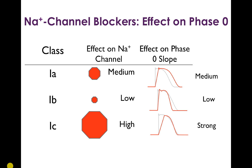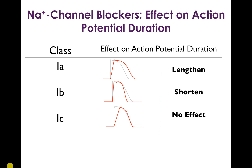Sodium channel blockers also vary in their effect on action potential duration, likely because they all have some effect on potassium channels as well. Class 1a drugs lengthen the action potential duration and prolong the QT interval — the surface manifestation of the action potential changes. Class 1b drugs shorten the action potential duration, and class 1c drugs have no effect on action potential duration. The key point: class 1a drugs prolong the QT interval on the surface ECG.